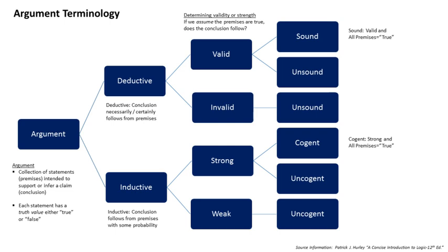Hume further argued that it is impossible to justify inductive reasoning — specifically, that it cannot be justified deductively, so our only option is to justify it inductively. Since this is circular, he concluded that our use of induction is unjustifiable with the help of Hume's fork. However, Hume then stated that even if induction were proved unreliable, we would still have to rely on it. So instead of a position of severe skepticism, Hume advocated a practical skepticism based on common sense, where the inevitability of induction is accepted.